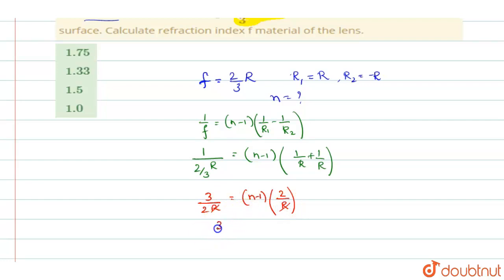So you can write it as 3 by 2 is equal to 2 into n minus 1, and if you simplify this out you will get n as 1.75.